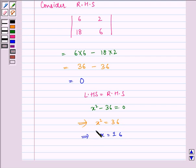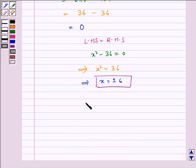Therefore, we have x = ±6, and hence the correct answer is (B). I hope you understood the problem. Bye and have a nice day.